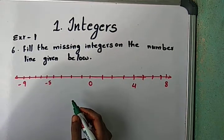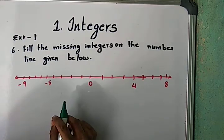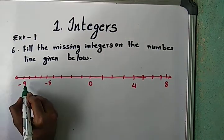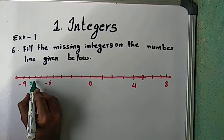We have to fill those missing integers. Minus 9 comes before minus 8, then minus 7, minus 6, minus 4, minus 3, minus 2, minus 1, and zero.